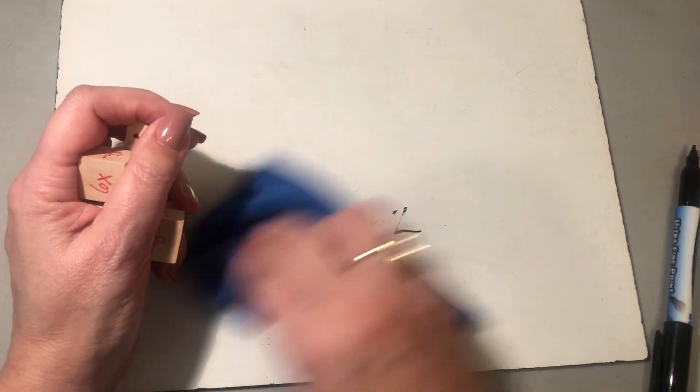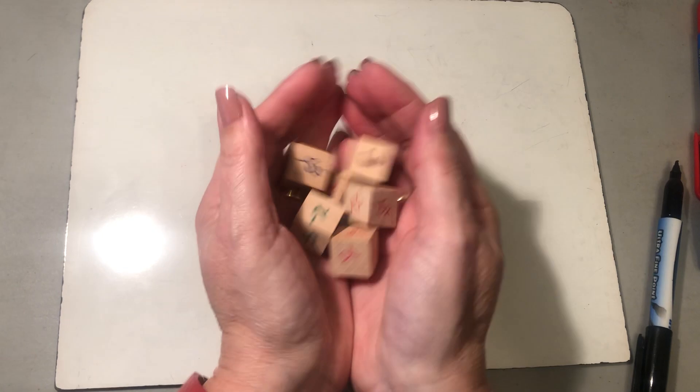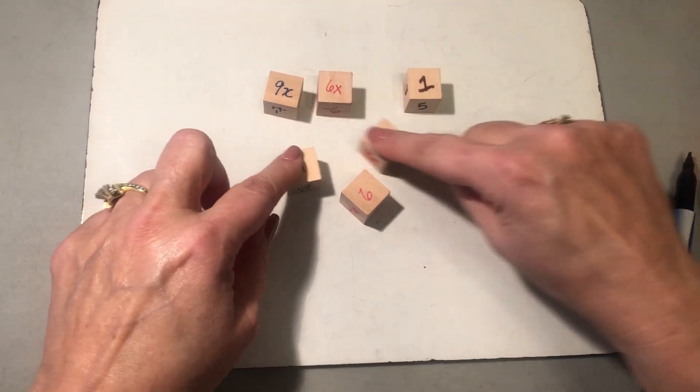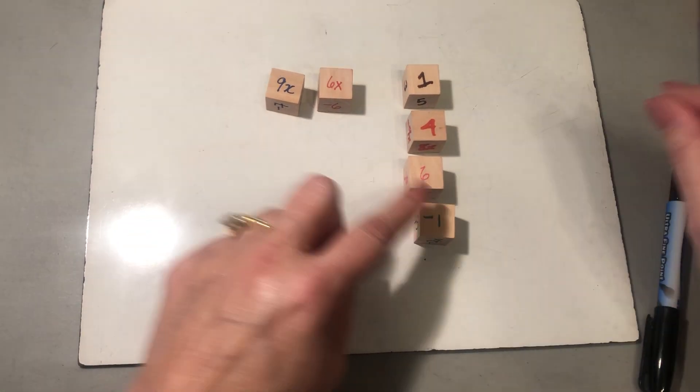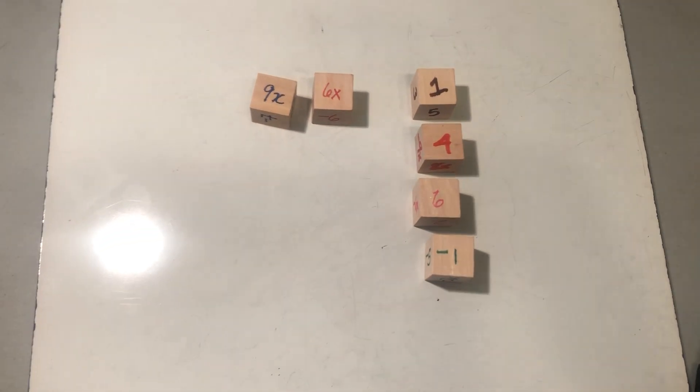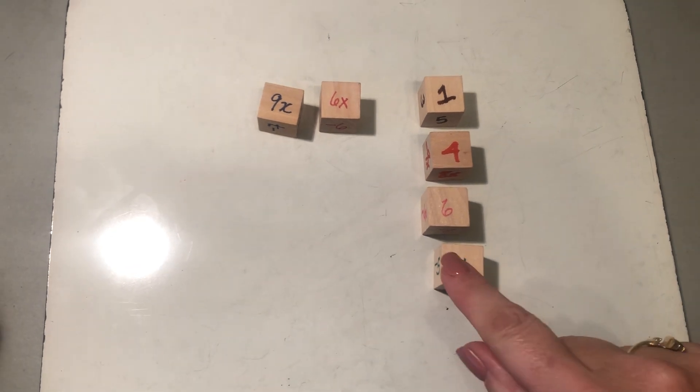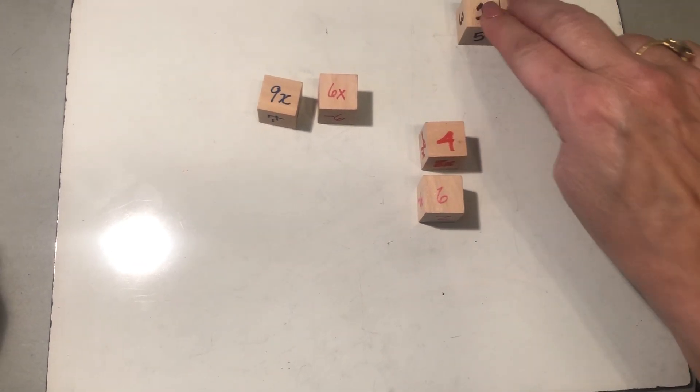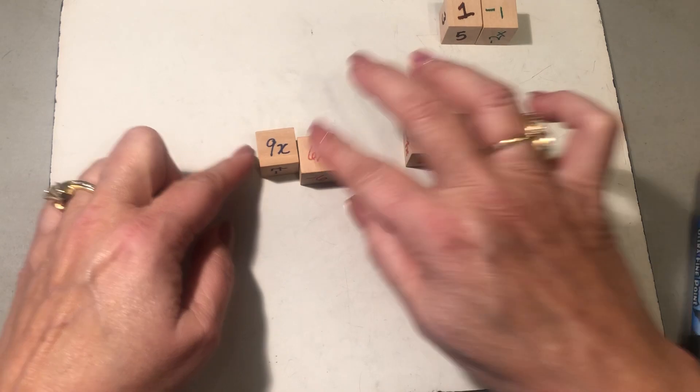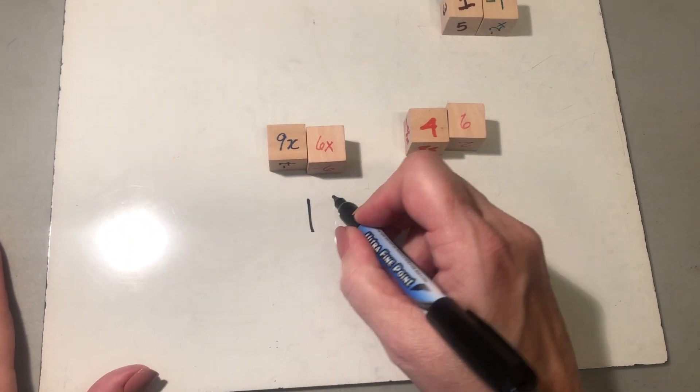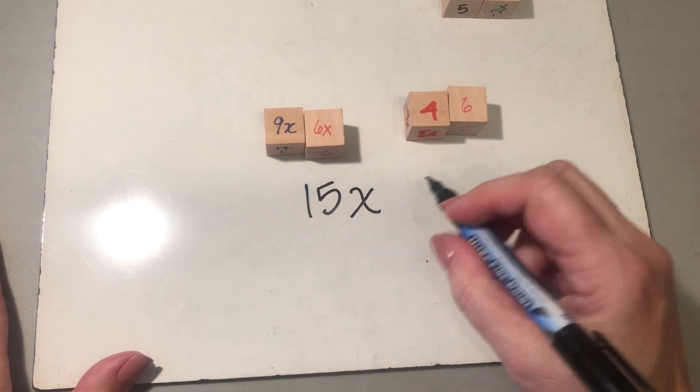I'm going to roll again. Take a look at that. Okay. I have a zero pair. Together, 15x plus 10.